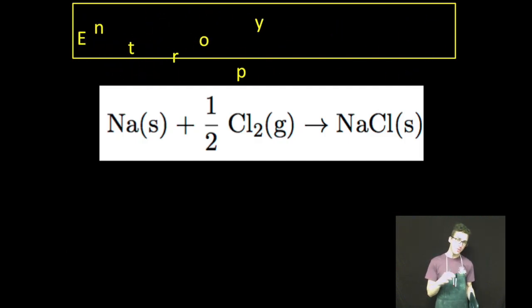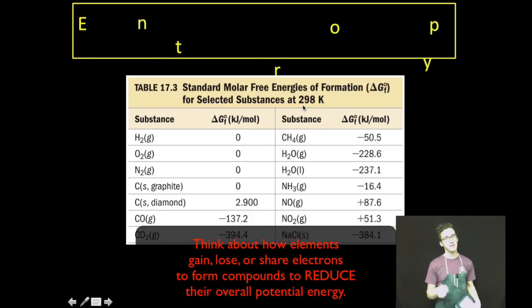So just as we looked at enthalpies of formation, Gibbs free energies of formation equations are going to show the formation of one mole of a compound from its elements in their standard states. As you take a look at a list of Gibbs free energy changes, most things will have a Gibbs free energy change that's negative. They'll spontaneously form from their elements. There are a few that are positive, but those things aren't commonly found.